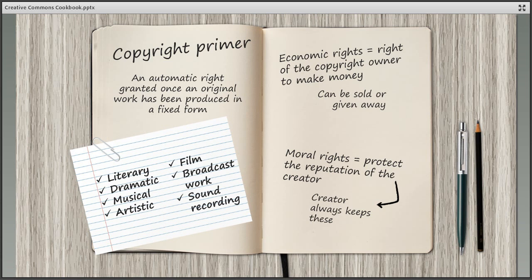Copyright law exists for a number of reasons. It offers an incentive to creators to encourage them to produce new works by giving them the chance to gain both money and a reputation from their outputs. The laws also offer creators a level of protection by helping to ensure that others don't claim credit for work they produced. Copyright is automatically granted once an original work meeting the criteria on screen has been produced in a fixed form — for example, typing up a book chapter.